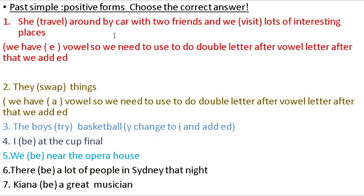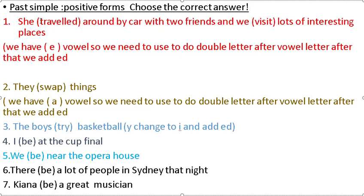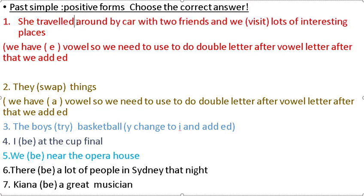Choose the correct answer: 'She traveled around by car with two friends and we visit lots of interesting places.' We have 'travel' — we have vowel letter E, after vowel letter we have consonant letter. The consonant letter will be doubled and after that add -ED.